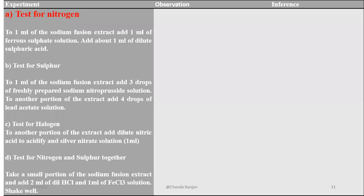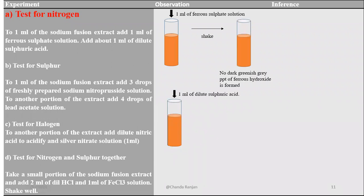Now we have the sodium fusion extract and we will test for special elements: nitrogen, sulfur, and halogens. First we test for nitrogen. We take the sample and add 1 mL of ferrous sulfate solution and shake it. If we get no dark greenish-gray precipitate of ferrous hydroxide, we follow with the addition of 1 mL of dilute sulfuric acid and heat it. If we then get a Prussian blue precipitate, nitrogen is present.